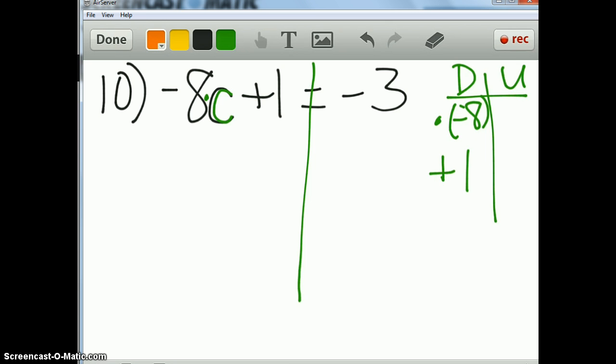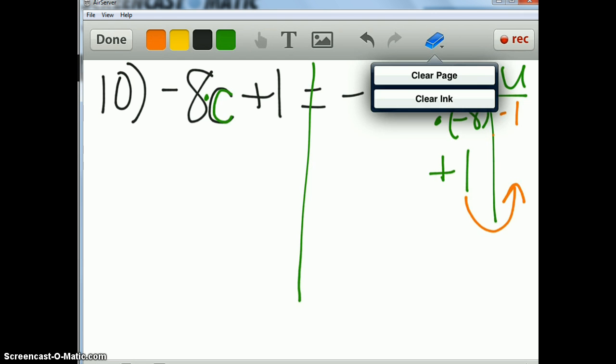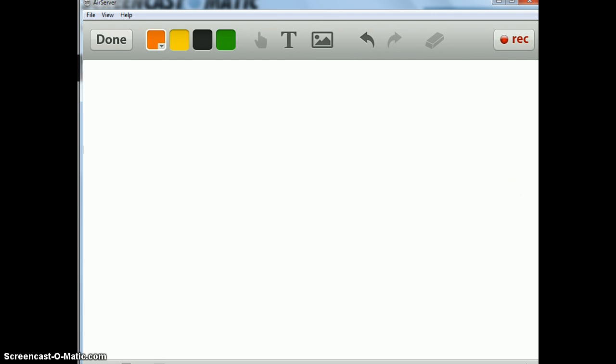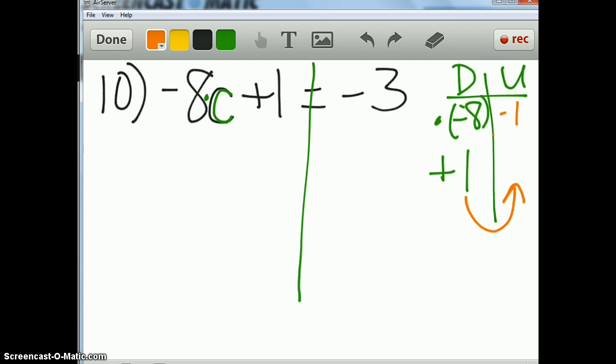So now I'm going to undo those things. The last thing I did was plus 1, so I'm just going to turn around and undo that. I'm going to choose, for me, it makes a little bit more sense to just go in and write it as it goes back up. So the opposite of plus 1 is minus 1. The opposite of times negative 8 is divided by negative 8.